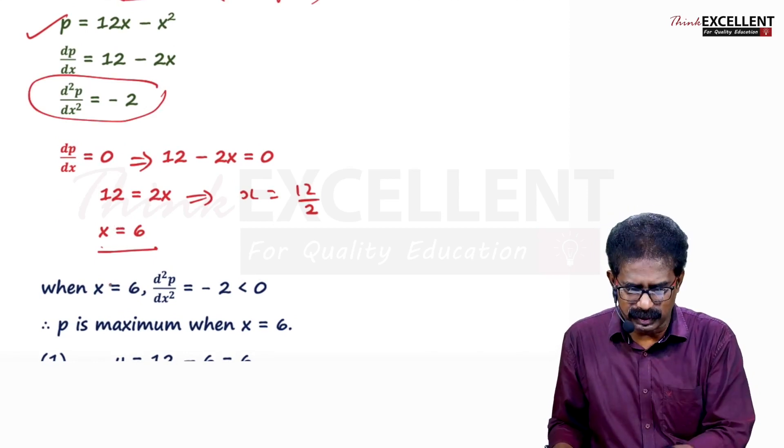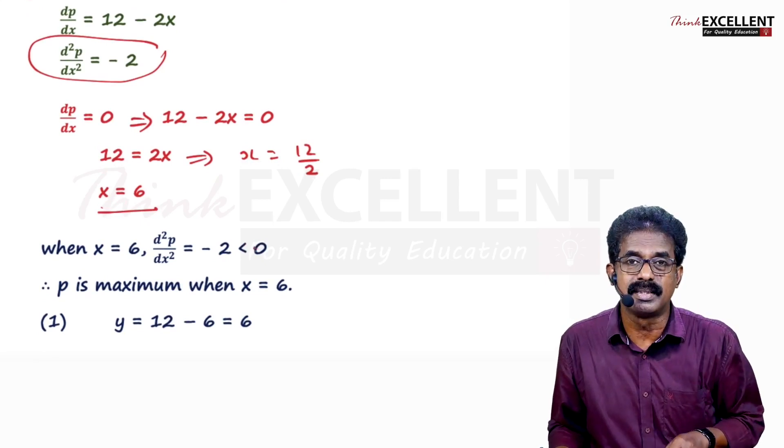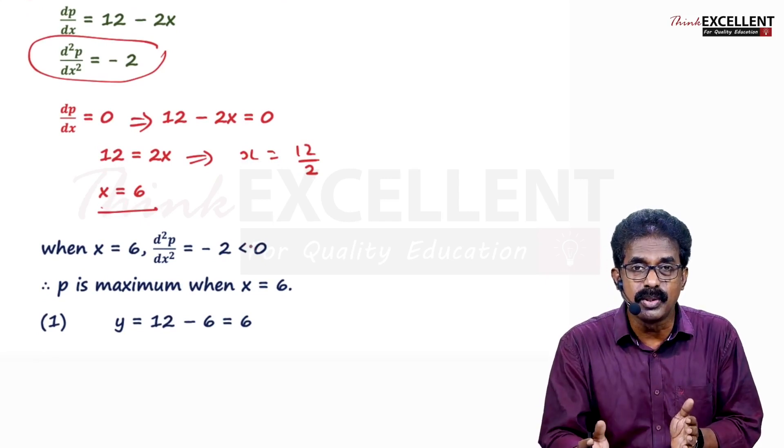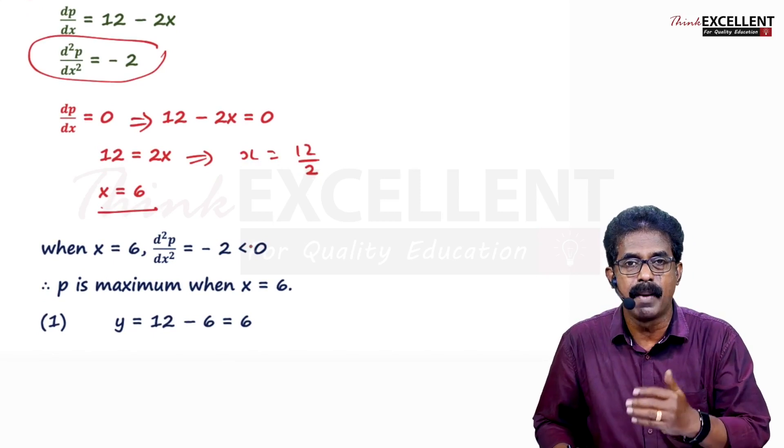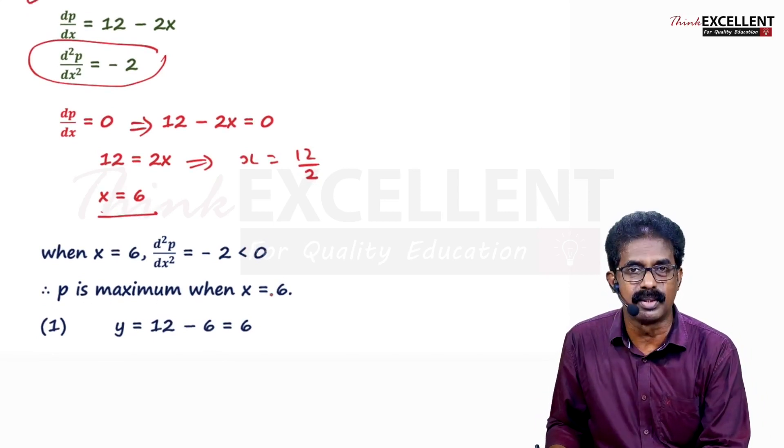There is no X at all. The second derivative is minus 2, which is negative, less than 0. Second derivative negative. So what can you say? There is a local maximum. So P is maximum when X equal to 6.